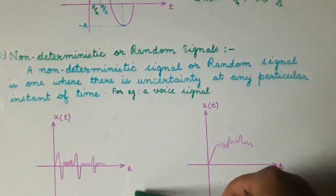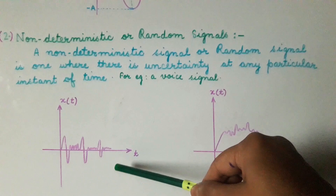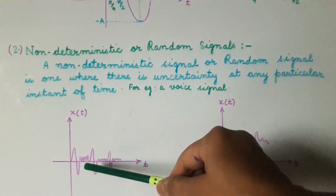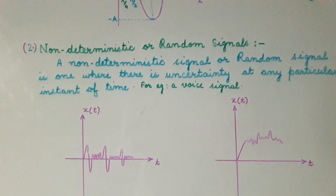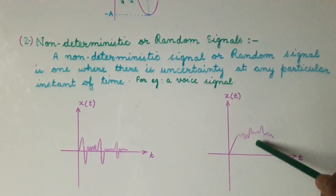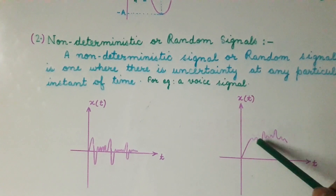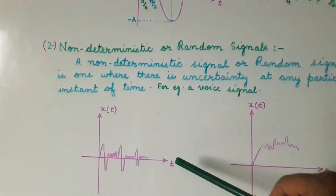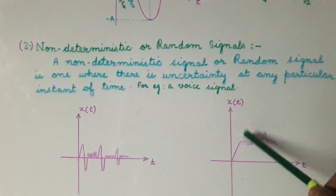For example, this is a voice signal. We find that the amplitude of this voice signal is varying very randomly. So if we want to find its value at any instant of time, we cannot find out its value — there is uncertainty in its value at any instant of time. Similarly, when we observe this signal, we find that it is also varying randomly with fluctuations. So we cannot calculate the value of this signal at any instant of time, and we cannot define this voice function by any equation because it is varying so randomly.